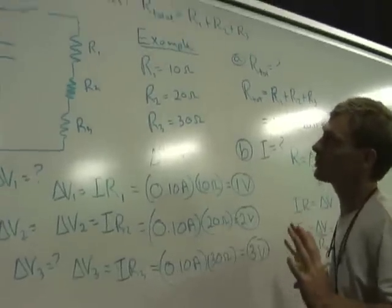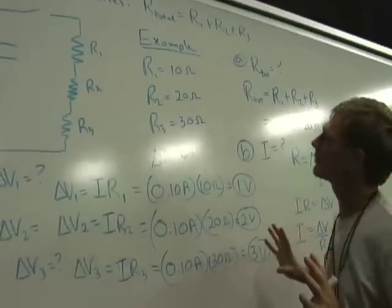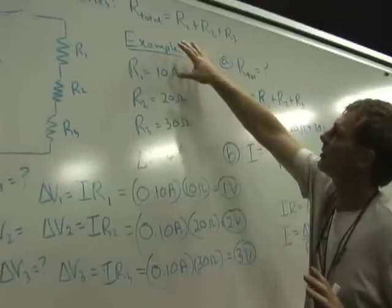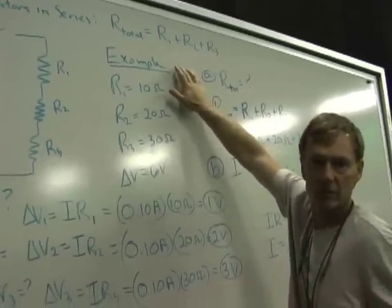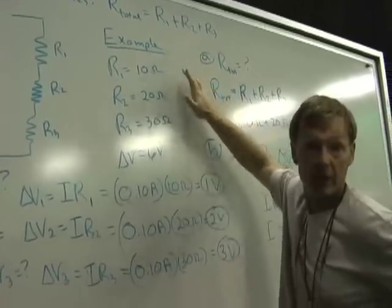So that's electrical resistance for resistors in series. And for resistors in series, you use Ohm's law, and you remember that the total resistance is the sum of the individual. Now we should talk about resistors in parallel.